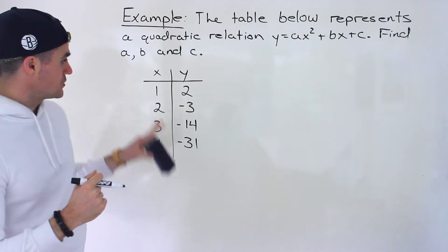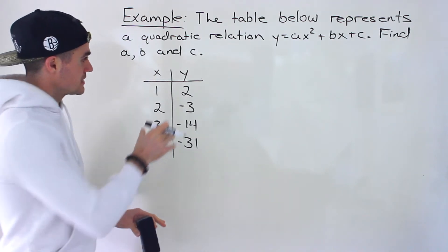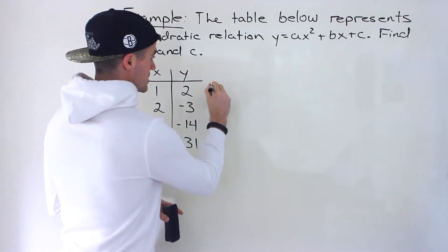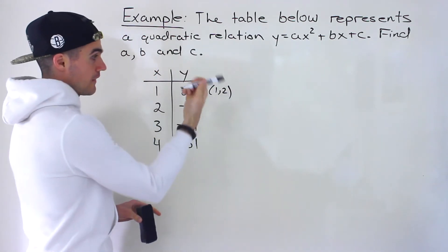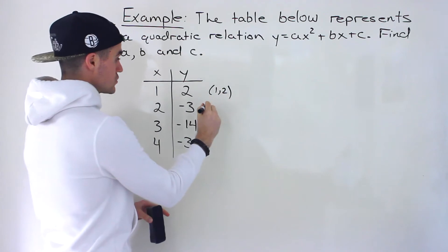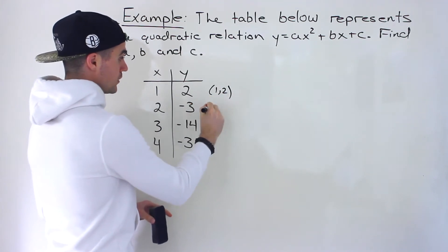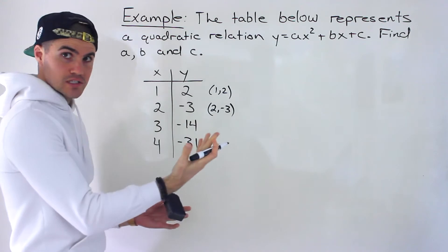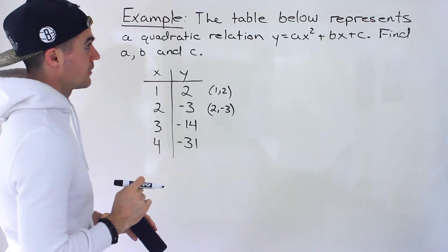So how do we do that if we are given a table like this? Notice that these are points. For example, the point 1 and 2 is on that quadratic — an x value of 1, a y value of 2. Then we have a point 2 and negative 3, then 3 and negative 14, then 4 and negative 31, etc.